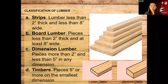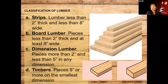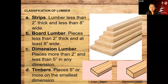We have strips — less than 2 inches thickness and less than 8 inches width. Board lumber — less than 2 inches thickness and at least 8 inches wide. Dimension lumber — pieces more than 2 inches but less than 5 inches in any dimension. And timbers — pieces 5 inches or more on the smallest dimension.